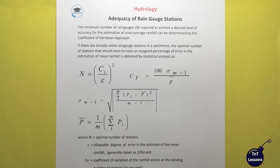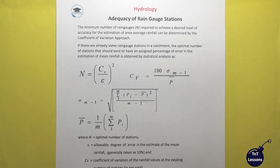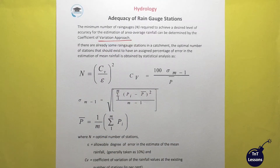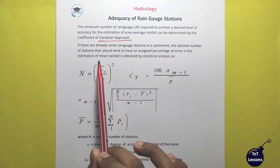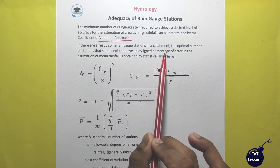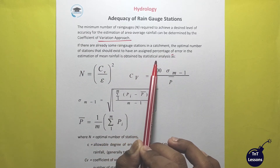This video is called Hydrology: Adequacy of Rain Gauge Stations. The first thing is the minimum number of rain gauges, N. N is the minimum number of rain gauges required to achieve a desired level of accuracy for estimation of area rainfall, and can be determined by the Coefficient of Variation approach. If there are already some rain gauge stations, the optimal number of stations that should exist to have an assigned percentage of error in the estimated mean rainfall is obtained by statistical analysis.